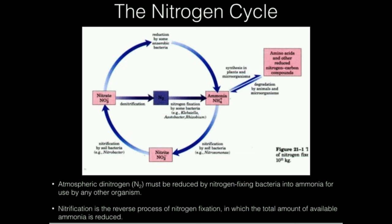It turns out that nitrogen ultimately comes from the atmosphere. You've probably seen dinitrogen — diatomic nitrogen, N2 — which is two nitrogen atoms joined by a triple bond. That's the N2 shown in the middle of the nitrogen cycle. Nitrogen from the atmosphere can undergo what is called nitrogen fixation. The way we ultimately use nitrogen is not in the form of dinitrogen N2 — it's in the form of ammonia. Because ammonia can then be made into amino acids. N2 doesn't do any good for us; we need nitrogen in the form of ammonia.